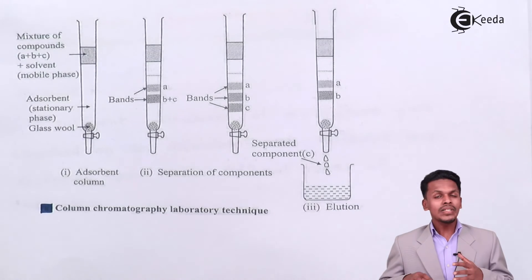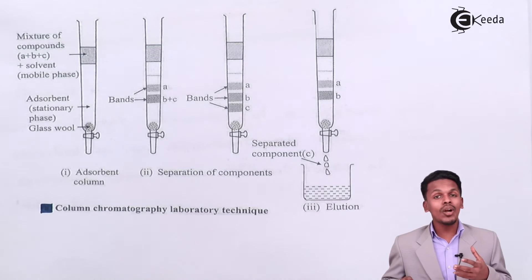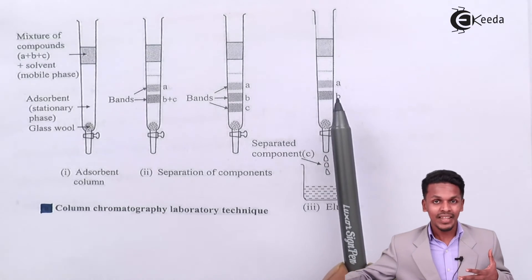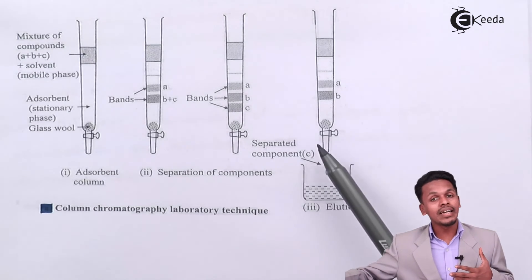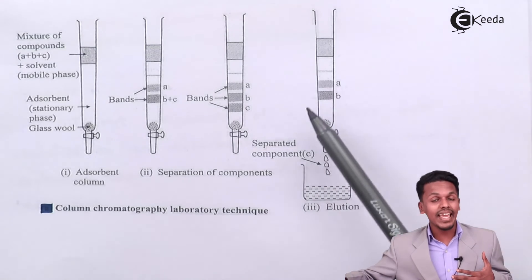The thing behind this is because C would be such a component which is not adsorbed more easily compared to that of the other two, that is A and B. And that's the reason it gets separated first, and after that it will be B and it will be A.